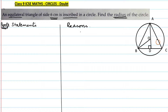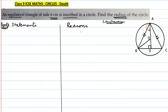I have shown equilateral triangle ABC in the diagram, with all three sides equal. The construction is to draw AD perpendicular to BC. You will write the construction on your own. I am directly coming to the proof just to save time.